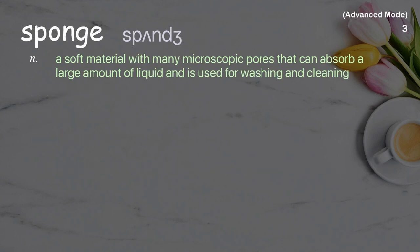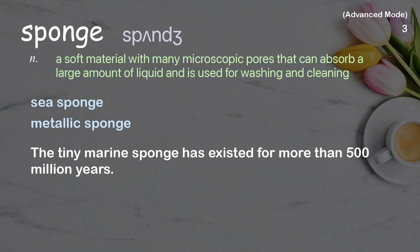Sponge. A soft material with many microscopic pores that can absorb a large amount of liquid, used for washing and cleaning. Examples: Sea sponge. Metallic sponge. The tiny marine sponge has existed for more than 500 million years.